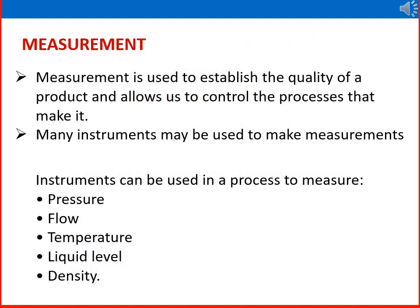To study the basics, let us start with measurement. Measurement is used to establish the quality of a product and allows us to control the processes that make it. For example, when you go to a petrol station, the fueling process involves instrumentation — measurement is there. We are paying money for one liter of petrol, one liter of diesel, etc.